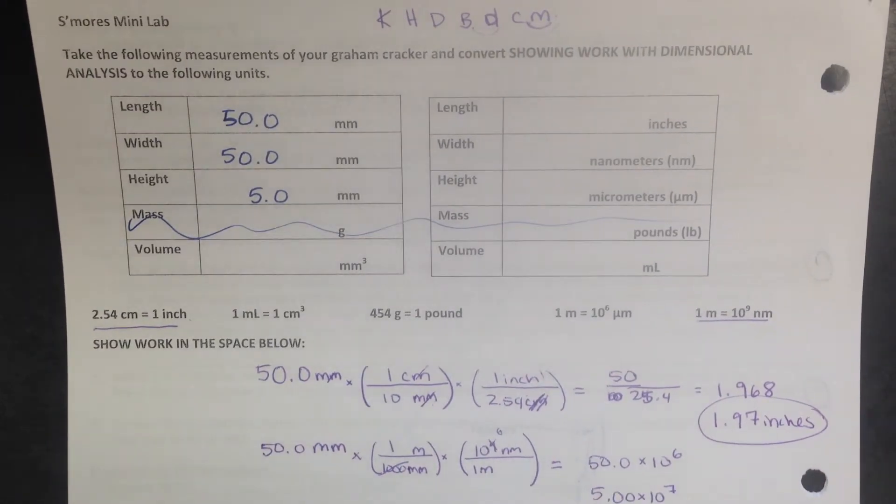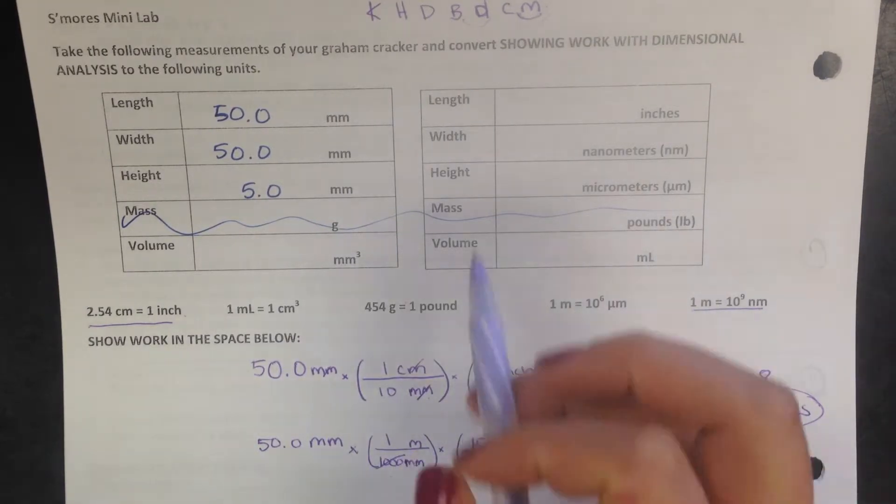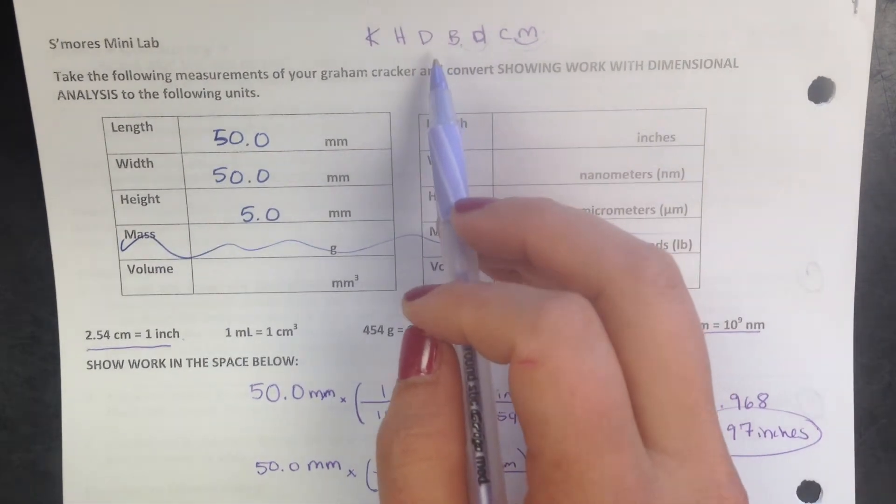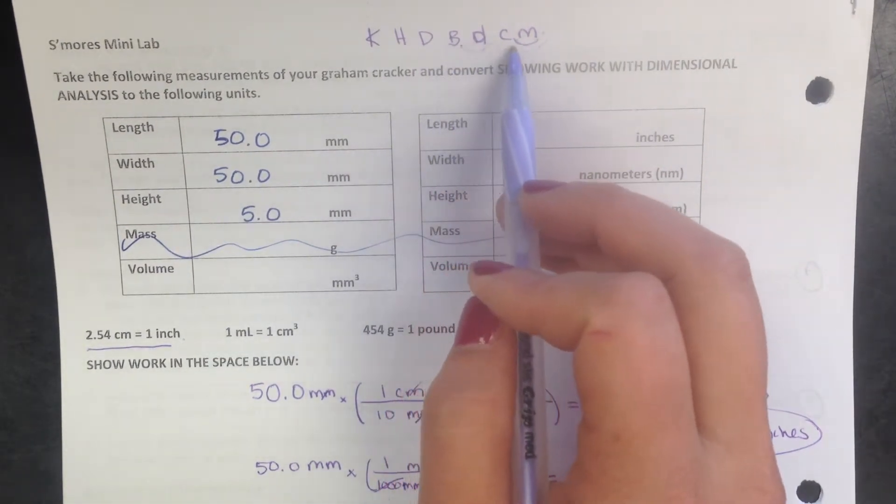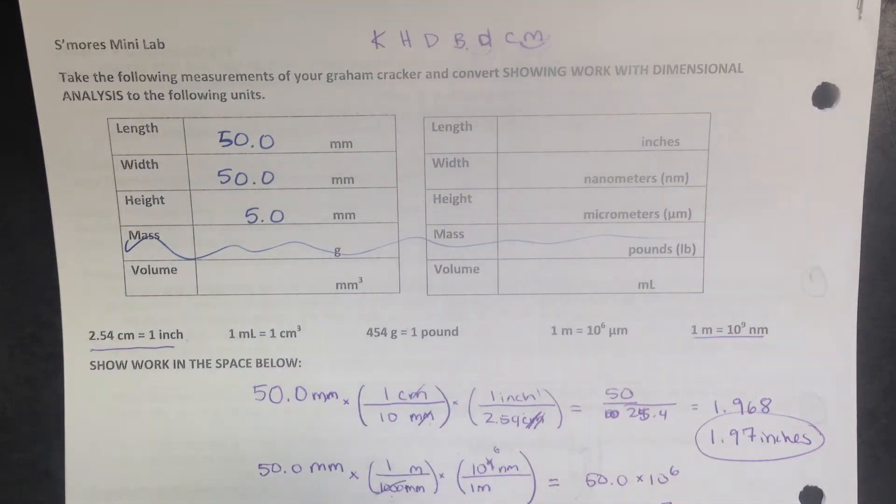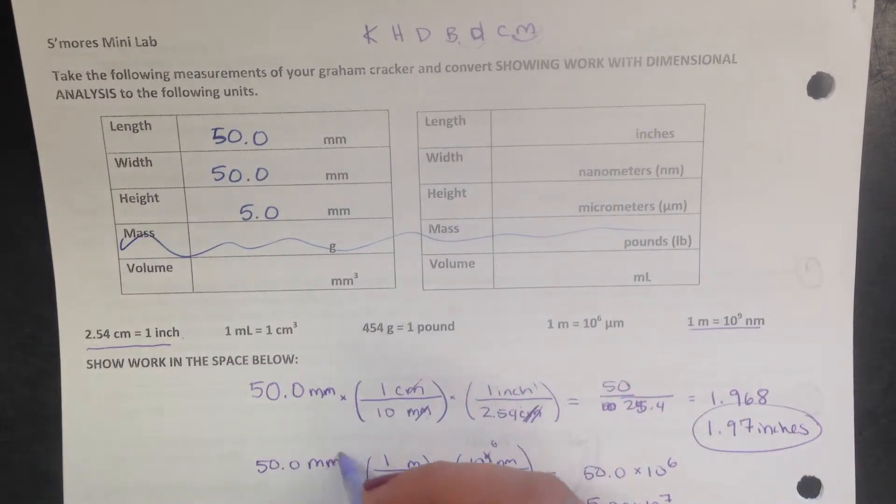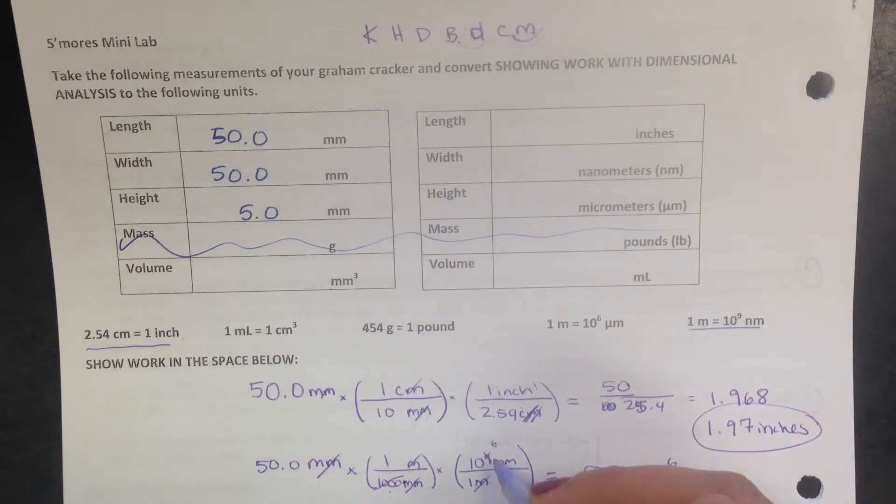We had to do millimeters to nanometers. The equality had meters in it, so I went from millimeters to meters using my King Henry. There's the base, one, two, three gave me a thousand millimeters. So I had a thousand millimeters in one meter, and units cancel, so millimeters and millimeters cancel. And then I went from meters to nanometers.